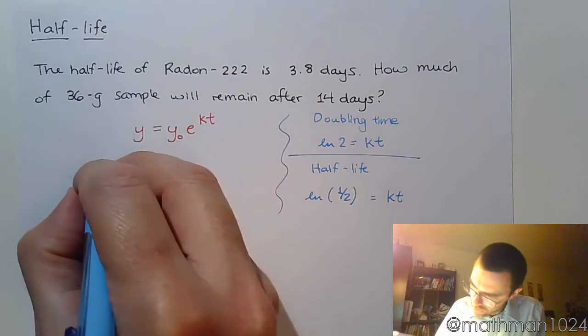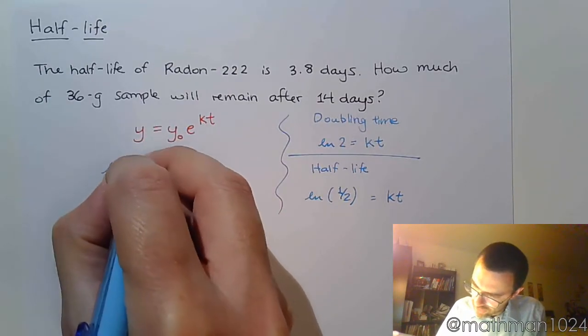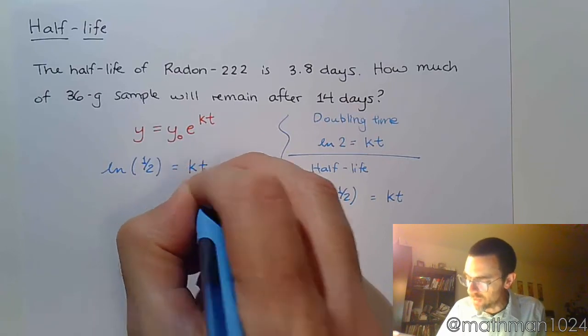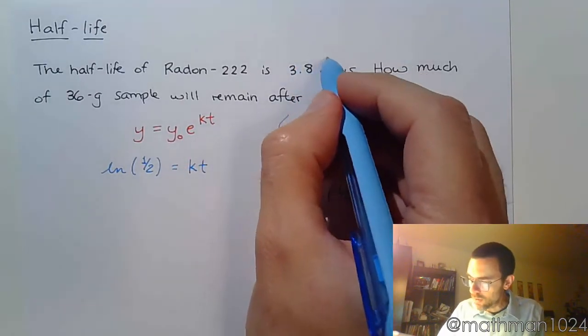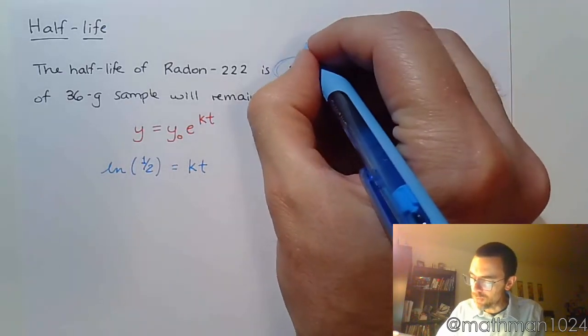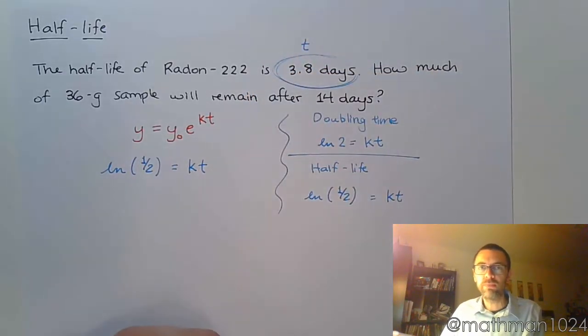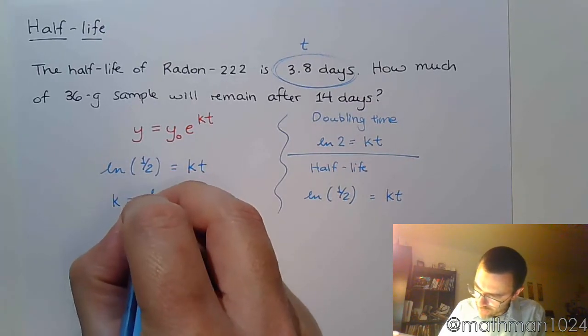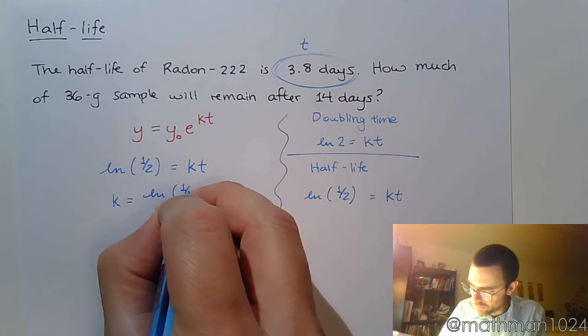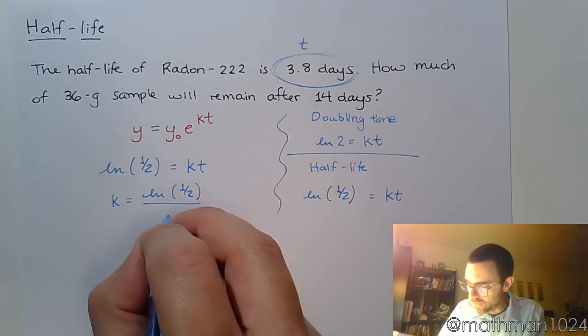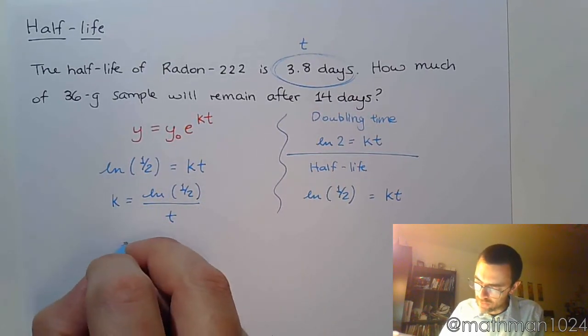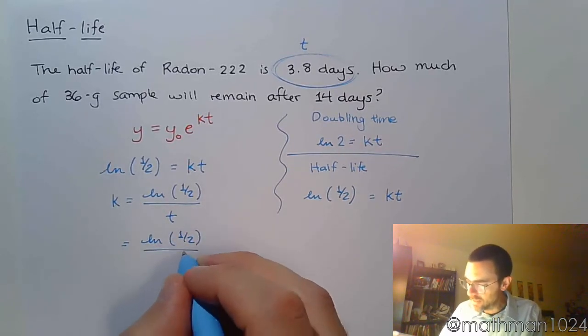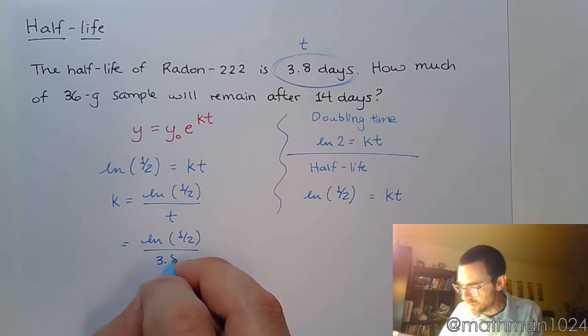So over here, let's look at that. I can say that the natural log of 1/2 is k times t. Now, I know my half-life is 3.8, so this is your t, that's your half-life. So that means that my k is the natural log of 1/2 divided by that half-life time. So the natural log of 1/2 divided by t, which is 3.8.